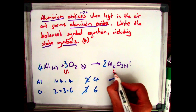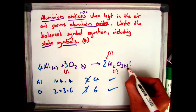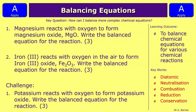That's about everything — let's let you guys have a go. You've got two normal questions and one challenge. Question one: magnesium reacts with oxygen to form magnesium oxide, MgO — write the balanced equation for the reaction, three marks. Question two: iron reacts with oxygen in the air to form iron three oxide, Fe2O3 — write the balanced equation. If you're feeling confident and want to push yourself, have a go at the challenge: potassium reacts with oxygen to form potassium oxide — work out the formula for potassium oxide and then write the balanced equation.